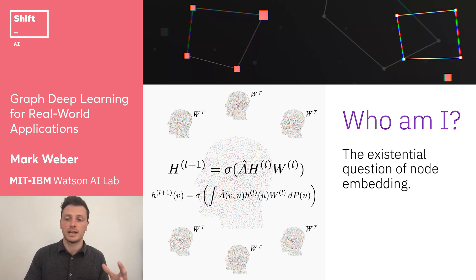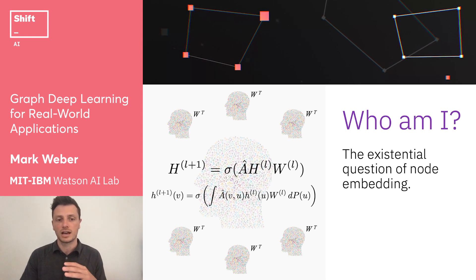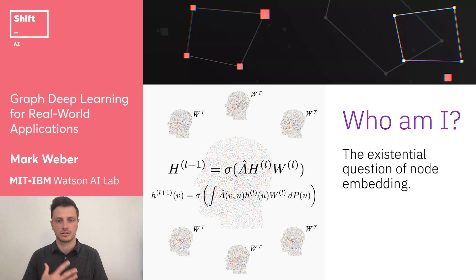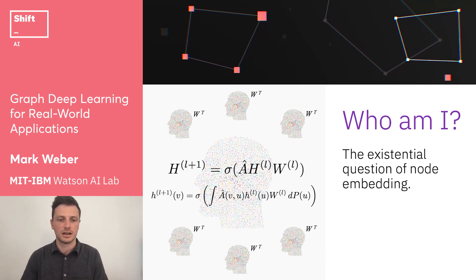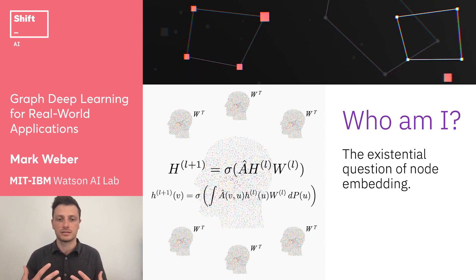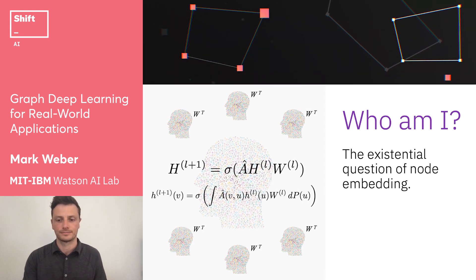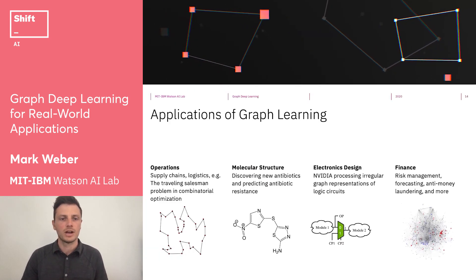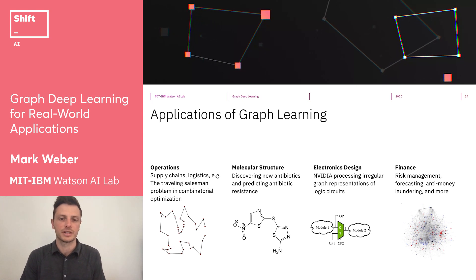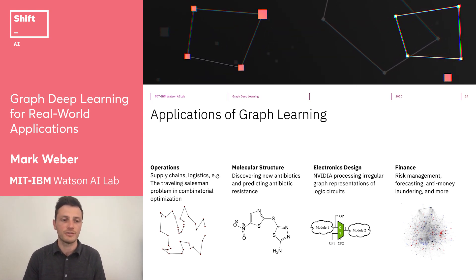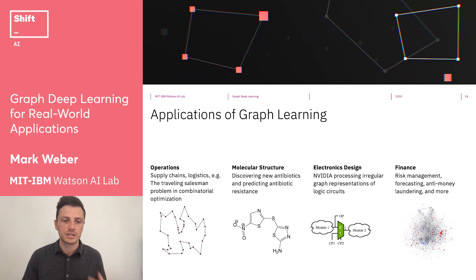That was two years ago and a lot of progress has been made since. This is how research goes — the community is contributing and it's moving, frankly, at a breakneck pace. Applications of graph learning are where things really get exciting for real world impact. Graphs, as I said, are everywhere.